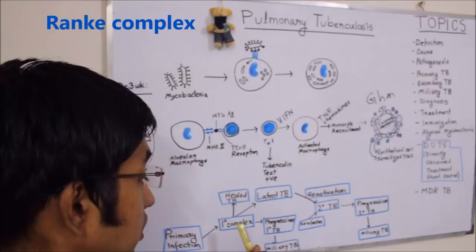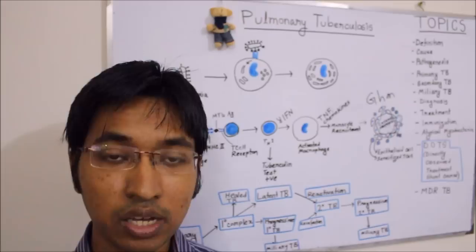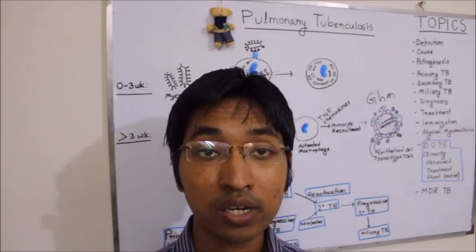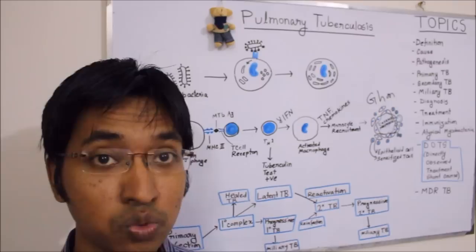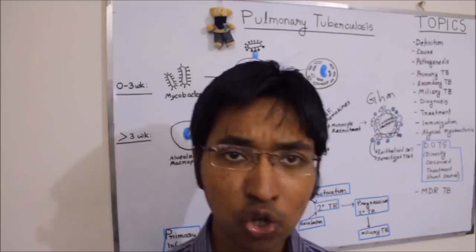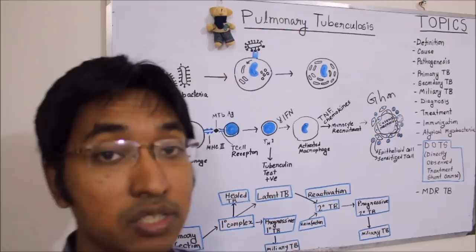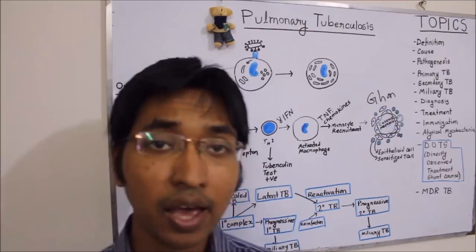Another fate is that primary TB can become latent or dormant in the individual and may later become reactivated when immunity becomes weakened, giving rise to secondary TB. The third fate is that it can become progressive primary pulmonary TB.